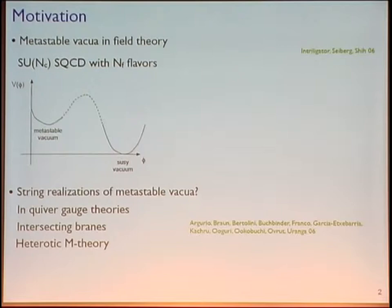Immediately, people wondered whether there were string realizations of metastable vacua, and lots of them were found in quiver gauge theories, in intersecting branes, and in heterotic M-theory. But these are all in the g-string going to zero limits. In particular, for intersecting branes, this means just straight branes, not taking into account the backreaction on the branes.